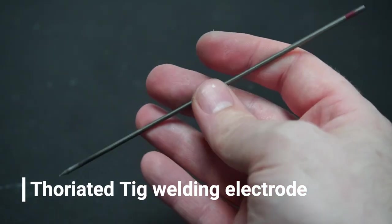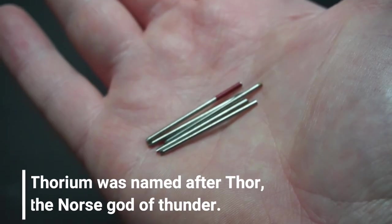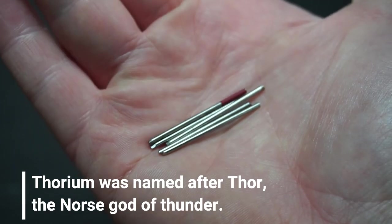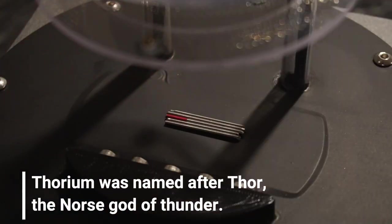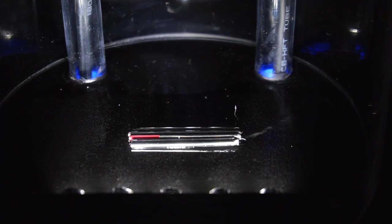Let's move on to beta rays. One source for this is thorated TIG welding electrodes which contain around 2% thorium. I cut an electrode into several pieces to fit inside the chamber. Beta rays produce long thin straight trails.